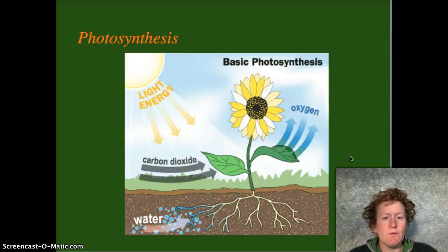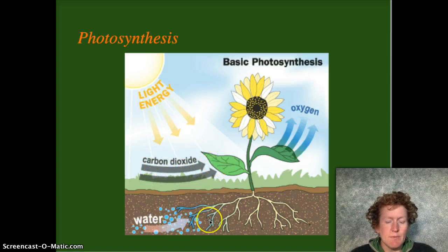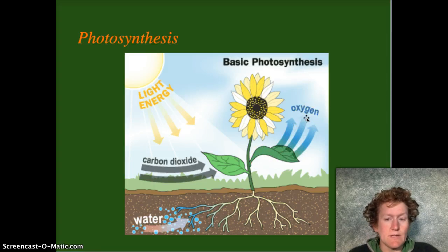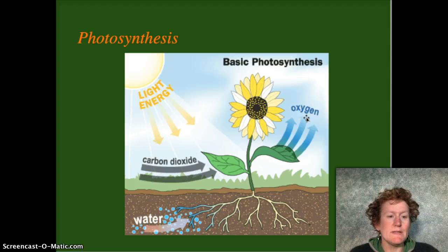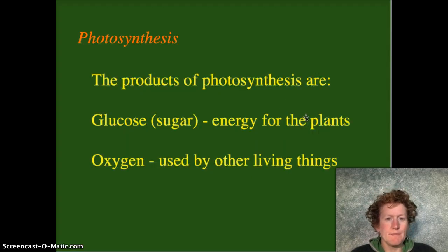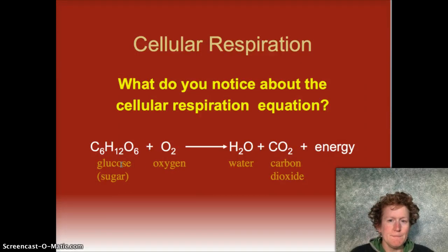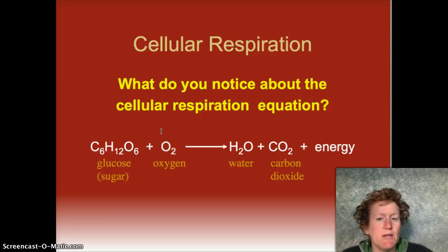Here's a visual overview of photosynthesis. The plant takes in carbon dioxide through its leaves and brings in water through the roots. The glucose is stored in the leaves and other parts of the plant, and the plant gets rid of the oxygen as a byproduct — plants don't need the oxygen until they do cellular respiration. The oxygen is a byproduct that's very handy for humans and other animals. The products of photosynthesis are glucose, a type of sugar, which is energy for the plants or anything else that eats the plants, and oxygen.